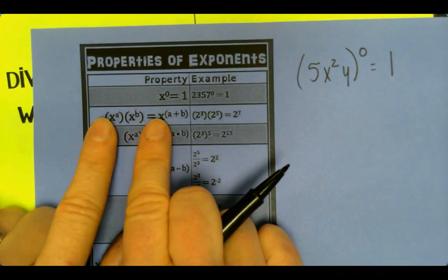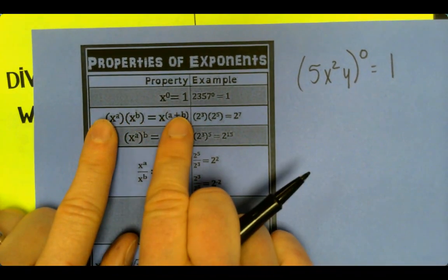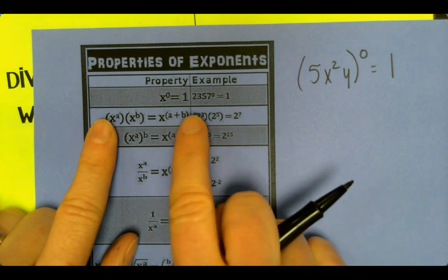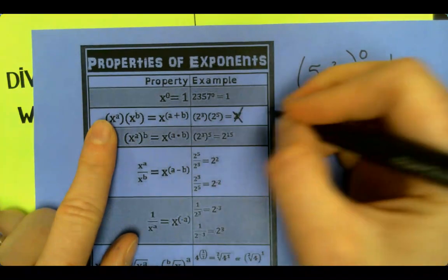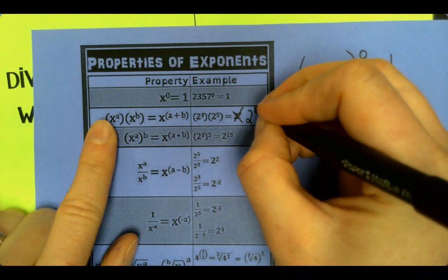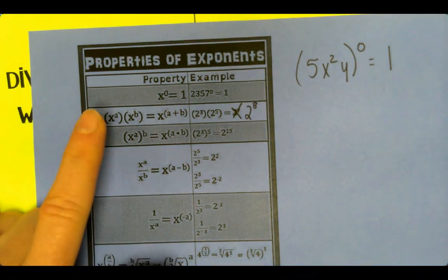Multiplying like bases, we're going to add our exponents together. This is wrong because 3 plus 5 is actually 8. So rewrite it with the correct exponent. It should be 2 to the 8th.